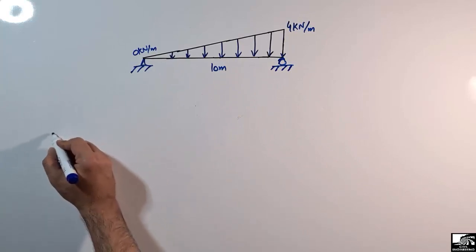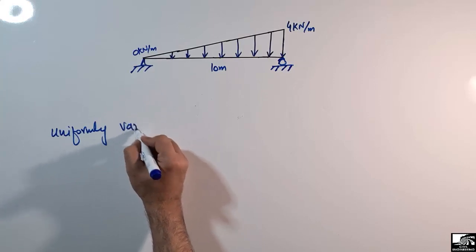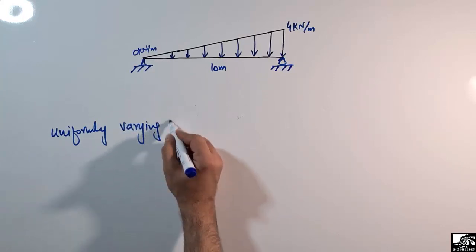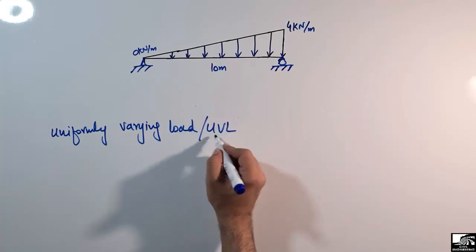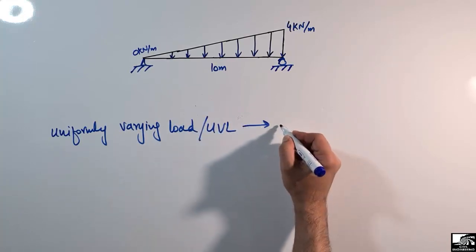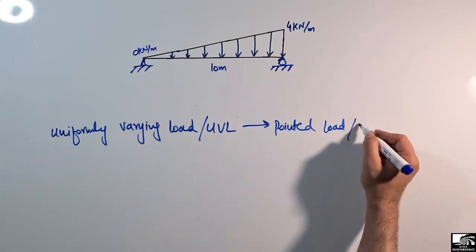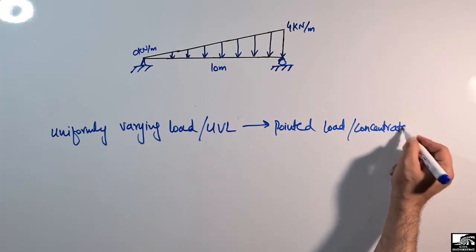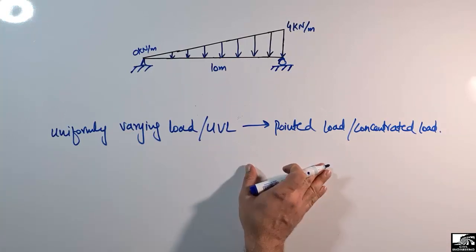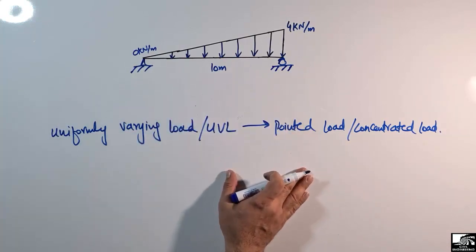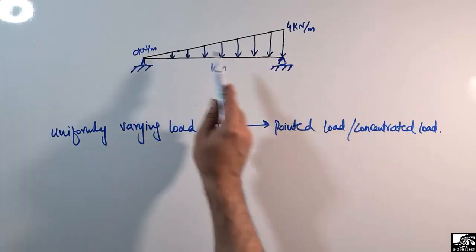The task is to convert the uniformly varying load, or UVL, into a pointed or concentrated load, and to find where this pointed load will act on the beam.